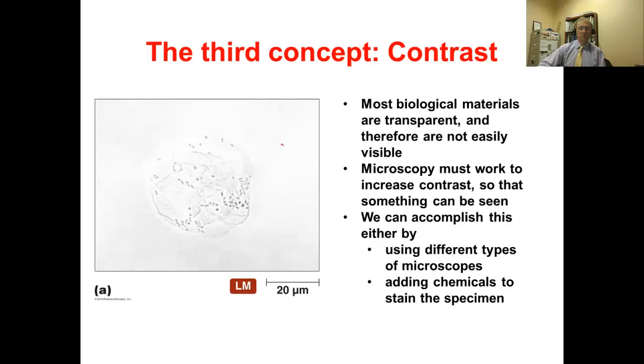The third concept is contrast. We'll spend time talking about the types of microscopes we can use to increase contrast. We need to increase contrast because most biological materials we might want to look at - cells and microorganisms - actually have no color in them. They're transparent. Consequently, with the light microscope, they're not going to be visible at all. We have certain kinds of microscopes that can actually increase the contrast by taking advantage of some of the distinct properties of light.